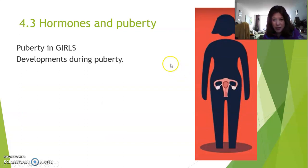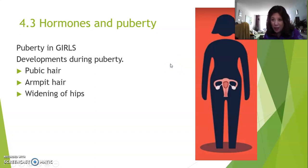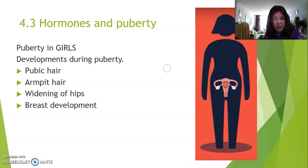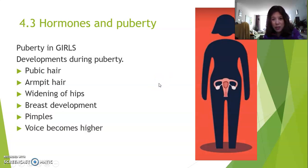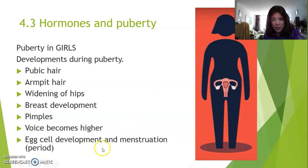When we look at girls, they also develop pubic hair and armpit hair, but they also get widening of the hips — because they develop a body shape that prepares itself for giving birth. Then there's breast development, pimples once again, and the voice becomes higher. And then there's egg cell development and menstruation, or in other words, your period.